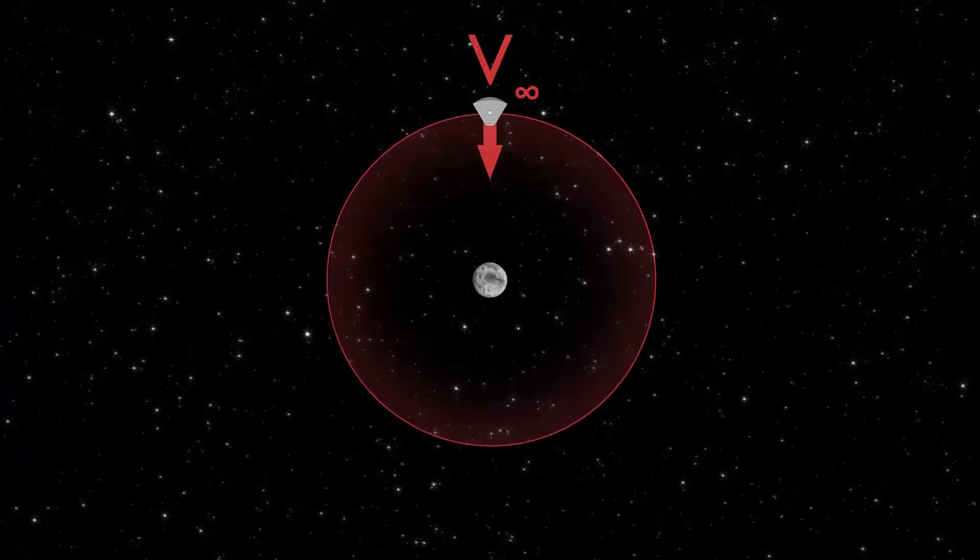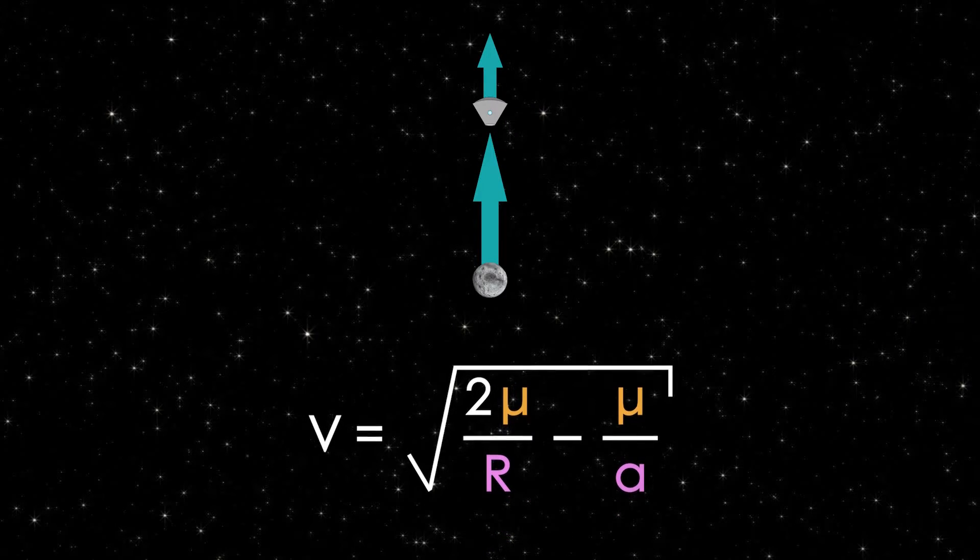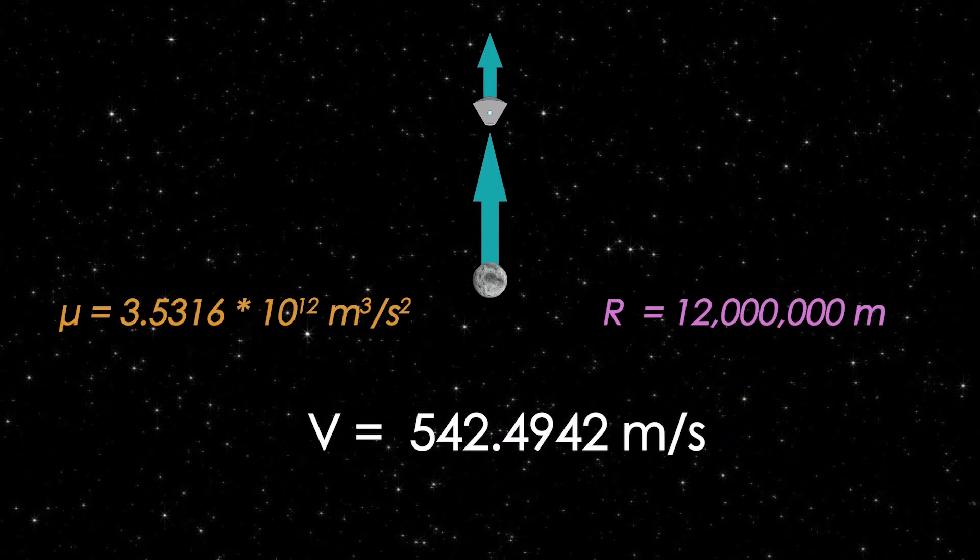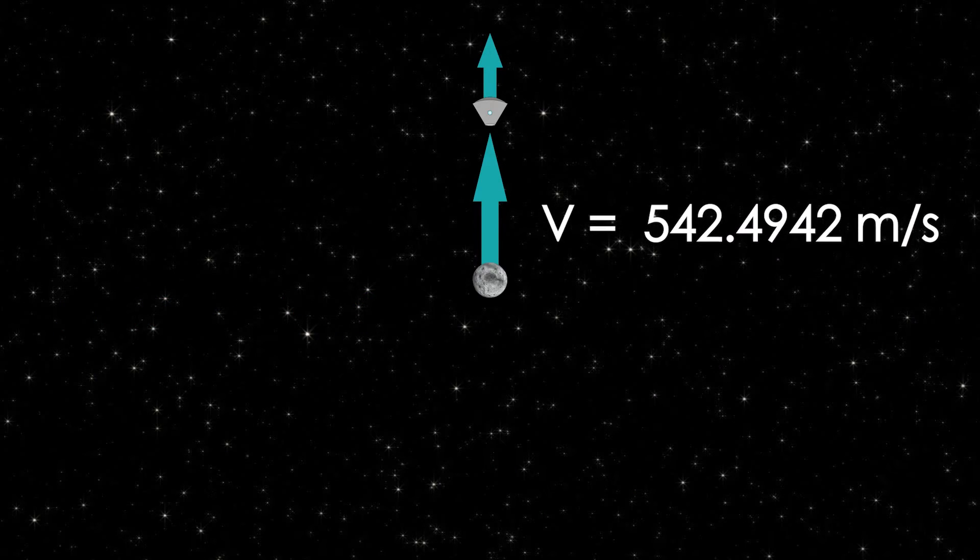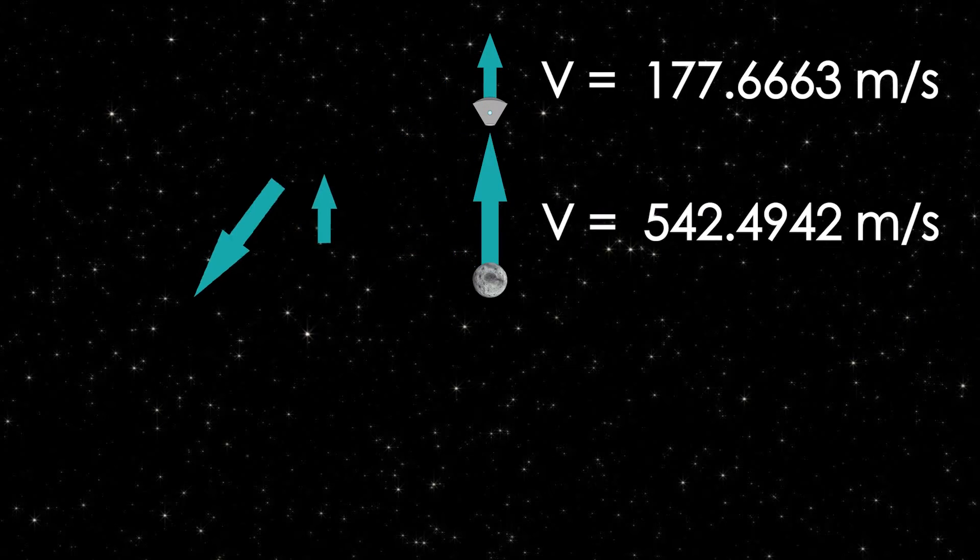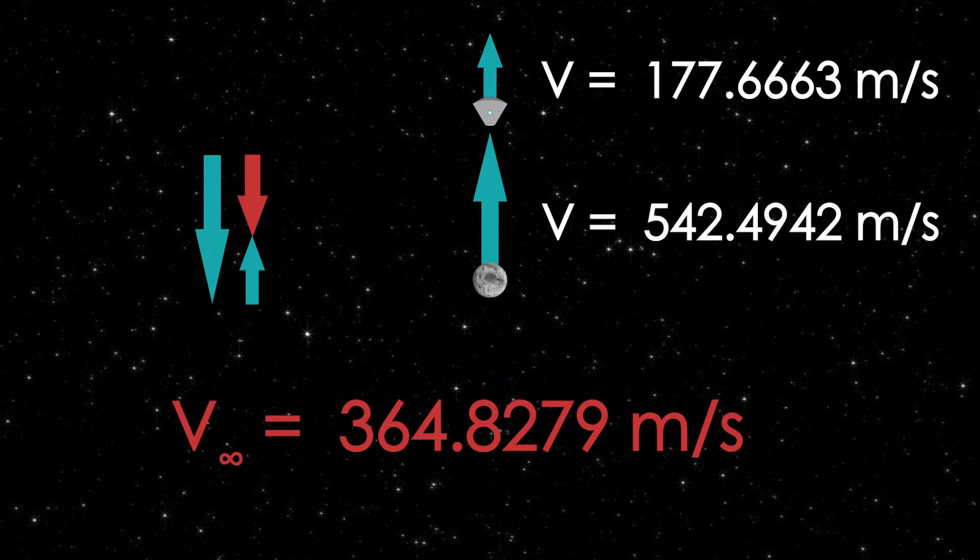Okay, back to the engineering. We find v-infinity by calculating the difference between our craft's velocity and the mun's velocity. Using our equation once again, we can find that the velocity of the moon is going to be 542.4942 meters per second. Also, because this is in the same direction as our velocity, we're going to subtract to find v-infinity, and it ends up being equal to 364.8279 meters per second.